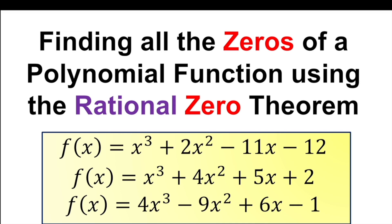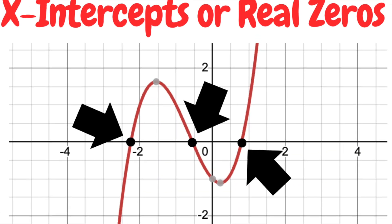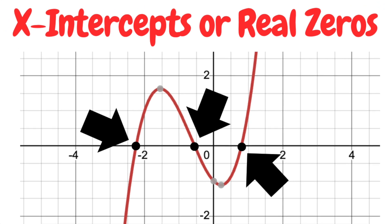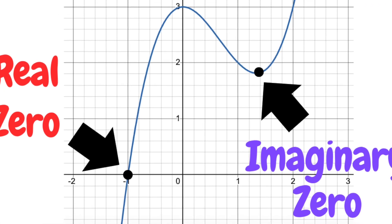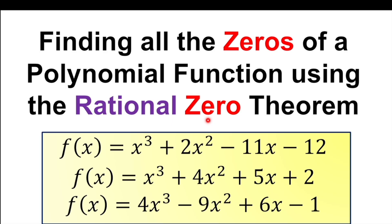Hi guys, welcome back to Super Math for You. This is Mr. Ego, and today we're finding all the zeros of a polynomial function using the Rational Zero Theorem. Rational means fraction, so we're going to use something that's a fraction. A zero of the function means the x-intercepts — if they're real zeros. If they're imaginary, they won't touch the x-axis, and I'll have a video for that in the future.